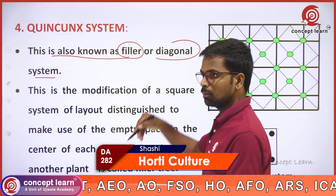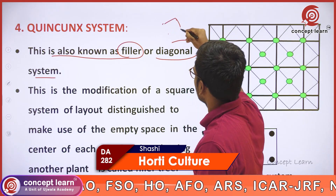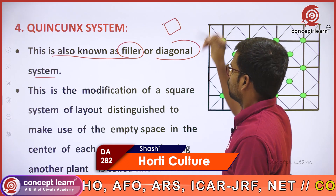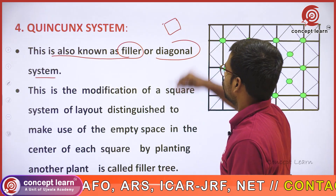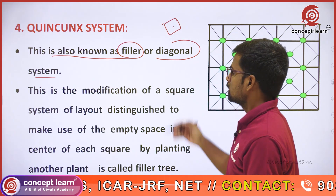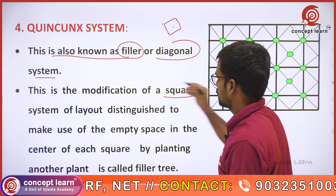In this case, we observe in the square system — we form a square in this empty space. This is a modification of a square system.